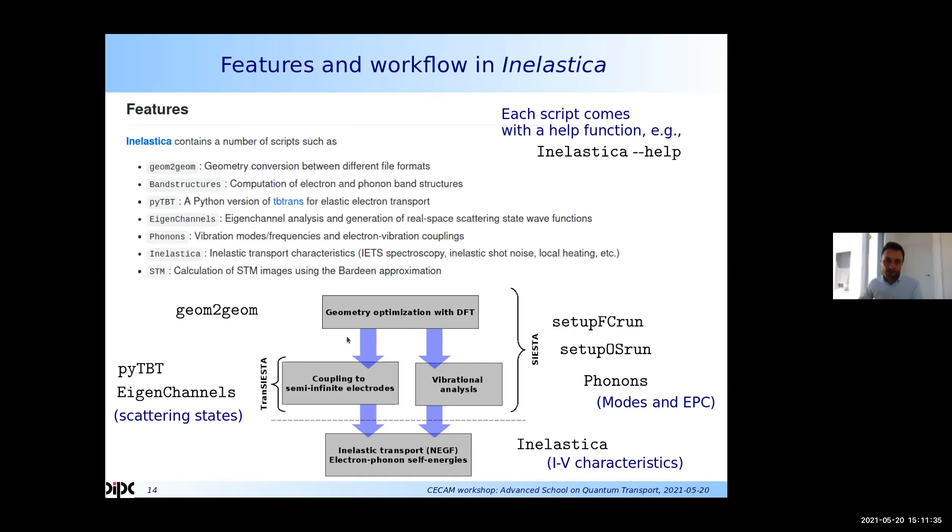A little bit of an overview of the workflow within Inelastica. It's a set of scripts that you can run from your terminal. And the workflow is as follows. Typically one starts with obtaining the junction geometry using standard relaxation. And then one hand, one can then use this for set up the TranSiesta calculation with the coupling to the semi-infinite electrodes. In a parallel effort, we need to compute the vibrations and electron phonon couplings. And this is then combined at the end of the day, using the script that is called Inelastica. So it's both the name of the package and the script that gives us the final output of this workflow. The package also offers other scripts like this geometry utility that can convert between different formats. And PyTBtrans was an effort to basically implement a TBtrans type of calculations in Python, but that's long time ago. And now everything is much better available in SISL.